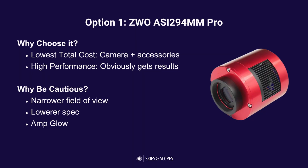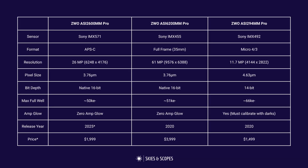Why would you want to be cautious about buying the 294MM Pro? The smaller sensor format gives you a narrower field of view, which limits your capacity to capture large targets. It's lower spec in terms of resolution — just under 12 megapixels, whereas the 6200 is 61 megapixels. The sensor also exhibits a light pattern called amp glow in the corners, which has to be calibrated out using dark frames, adding a mandatory step to your processing workflow.